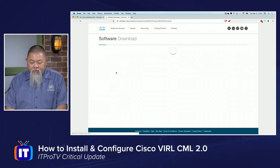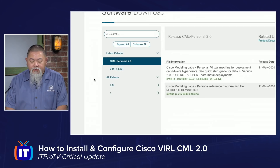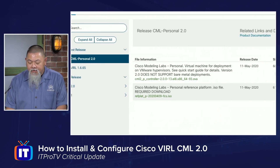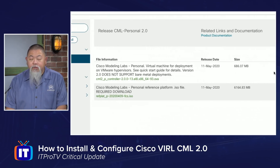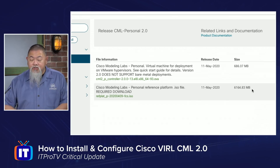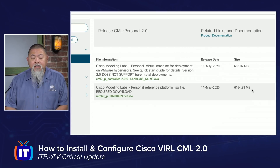On the download in the software section, there are two files that you need. So you go under latest releases, and what you're looking for and what you need to download are both of these. Do not be fooled by downloading just one — go and download both of them. For the sake of time, I've gone ahead and done that.